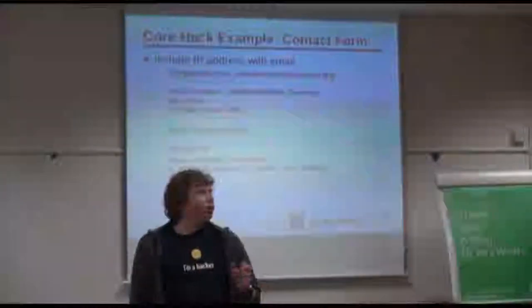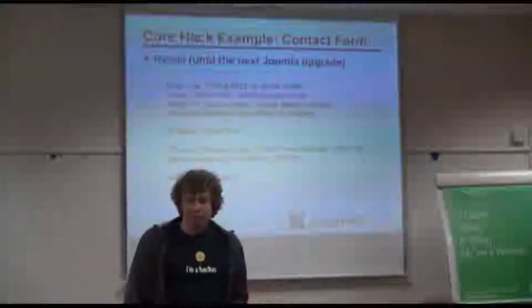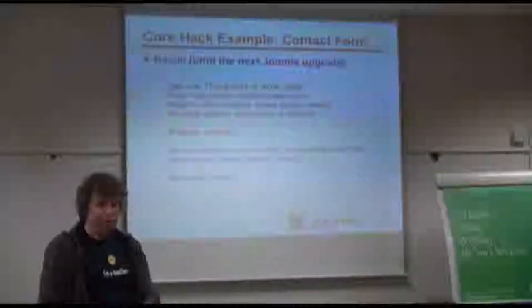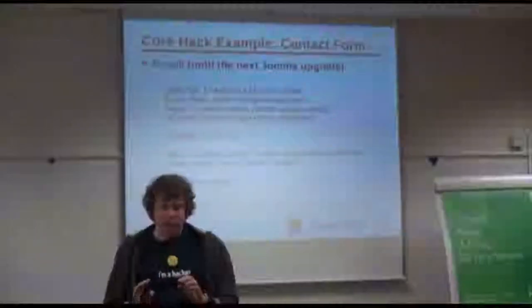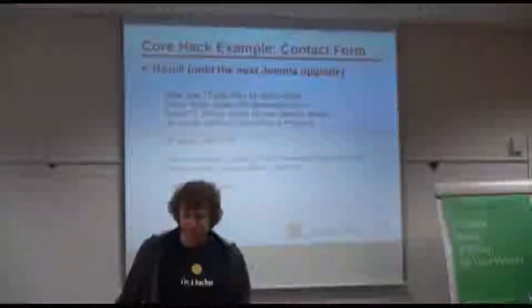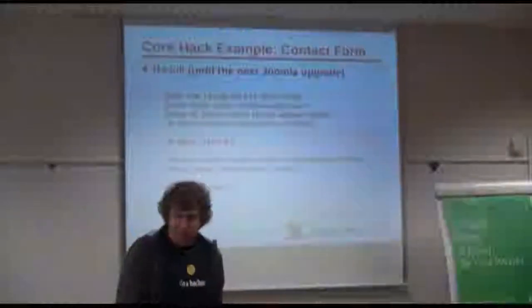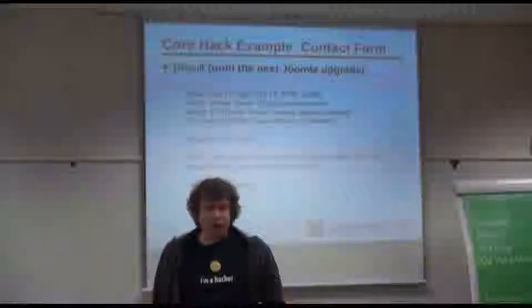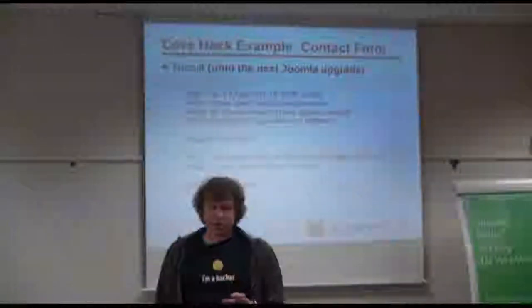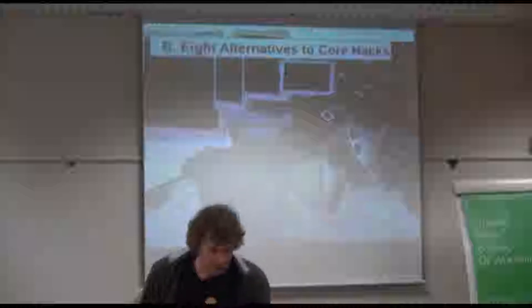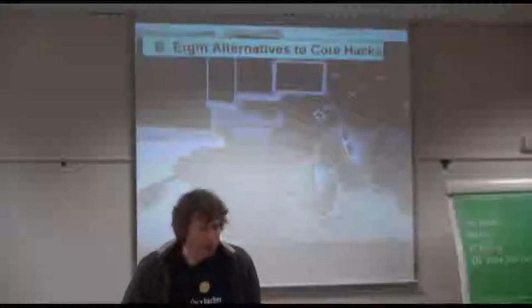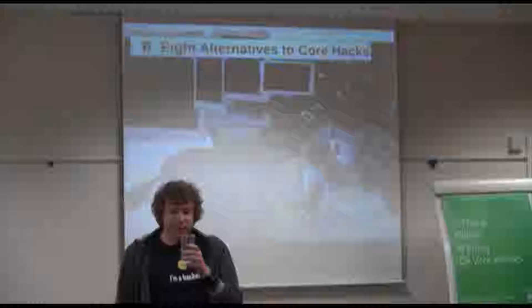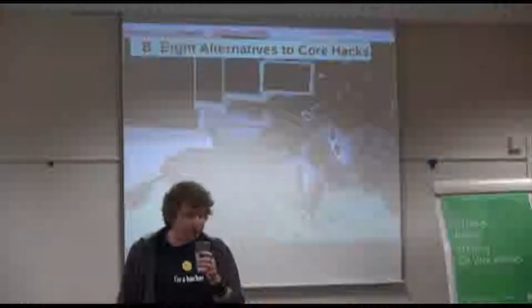When somebody visits my website and uses the form, I have this nice IP address. This is my local IP address — I still use IPv4 instead of IPv6, so it's my home address. However, it only works till the next Joomla upgrade. So now I would like to discuss six alternatives to core hacks, because two are too difficult and I don't have time.